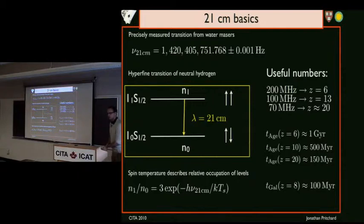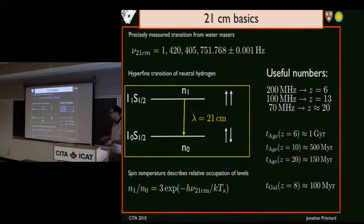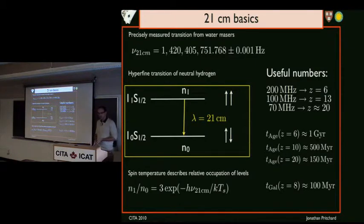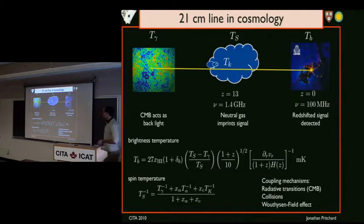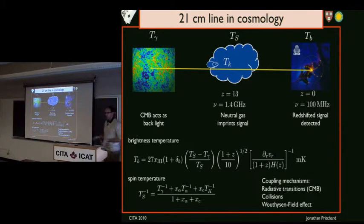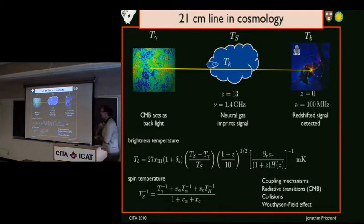70 MHz is about the lower design specification of the escalator array. These correspond to ages probing the first billion years of the universe, from one gigahertz down to 150 MHz — very comparable to the ages of galaxies at the highest redshifts we see. So you really might begin to see properties of the first galaxies. In a cosmological setting, the idea is to use the cosmic microwave background as a backlight, with neutral hydrogen along the line of sight imprinting a feature at the rest-frame frequency, which redshifts to frequencies around 100 MHz — slap bang in the middle of your favorite FM radio station.